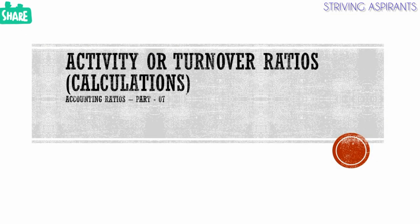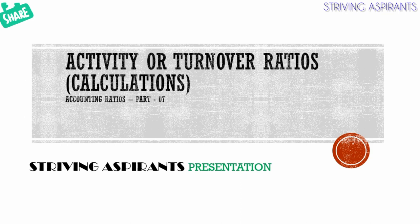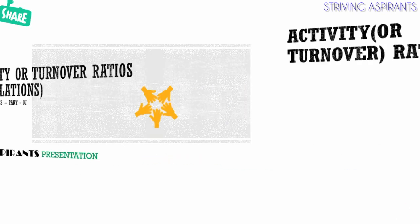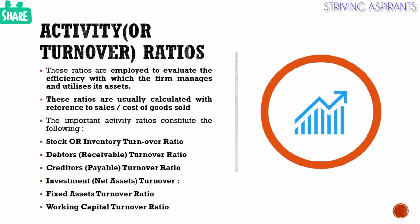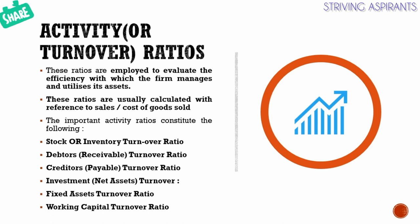Hi friends, welcome back to Striving Aspirants. In this video presentation we are checking some examples related to activity or turnover ratios. In the last presentation I have already given some introductory part related to these ratios — those who need can check the link in the description. We have already seen the activity or turnover ratios which include stock or inventory turnover ratio, debtors or receivable turnover ratio, creditors or payable turnover ratio, and investment or net assets turnover ratio which constitutes fixed asset turnover ratio and working capital turnover ratio.